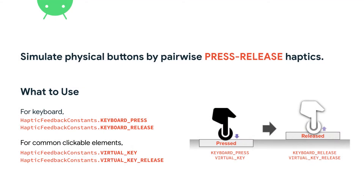Assuming that you're working on a button, it comes with a click event. Just remember one thing: the reason you want to have haptic feedback for a click event is, in general, to simulate the behavior of the physical hard button, which mostly comes with a pairwise interaction model of pressing and releasing. Just remember the pairwise interaction of press and release and go find your haptic constants.